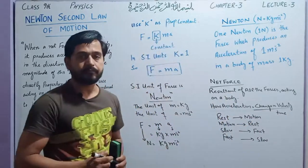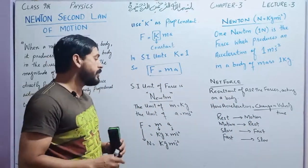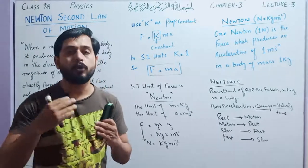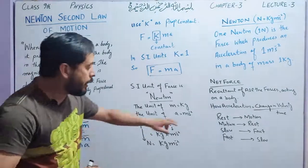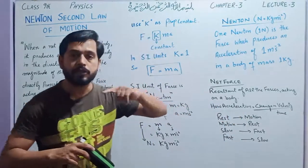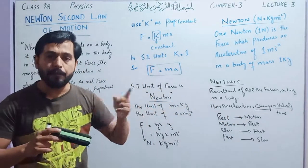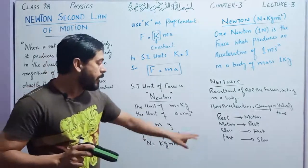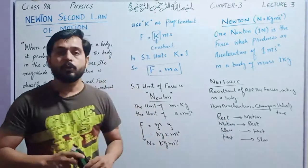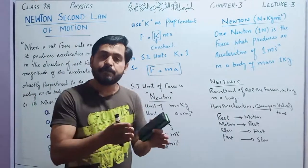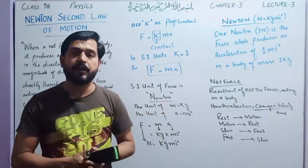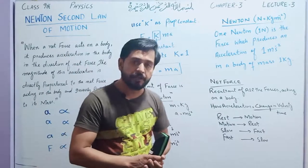Now let us understand in which particular situations acceleration can occur in a body. According to this definition, if a body is at rest, its velocity is zero. If it goes from rest to motion, velocity changes — it takes some time — so it is called acceleration. If a body is in motion and it comes to rest, before stopping it had velocity, but after coming to rest the velocity is zero — velocity changes and it takes some time — so this is also called acceleration.